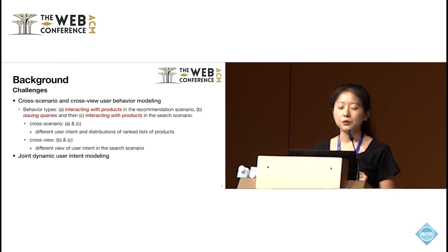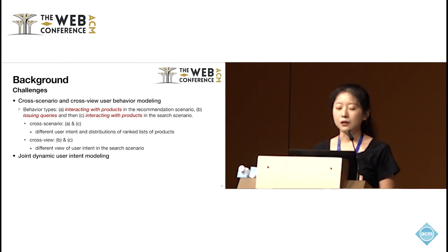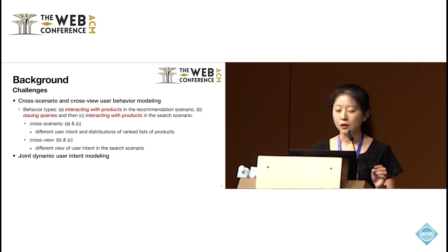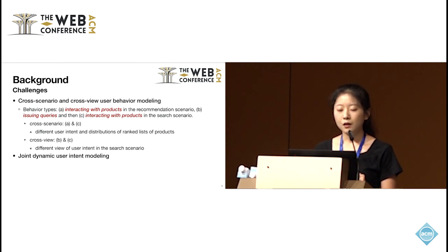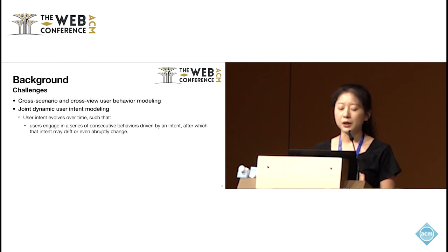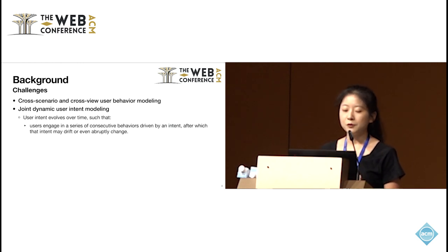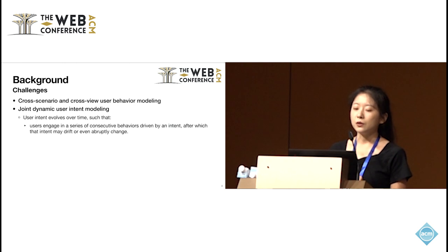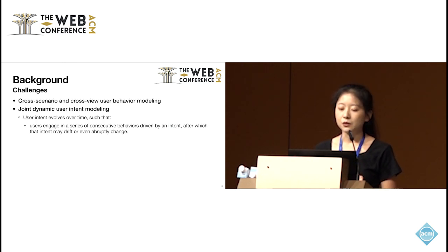In order to build such a unified model, there are two main challenges we should consider. One is the cross-scenario and cross-view user behavior modeling — cross-scenario behaviors include interactions with products in two scenarios, while cross-view behaviors include the user issuing a query and then interacting with products in the search scenario. The second challenge is that in a user behavior sequence, user intent evolves over time, so users engage in a series of consecutive behaviors driven by an intent, after which that intent may drift or even change. This is the joint dynamic user intent modeling challenge.